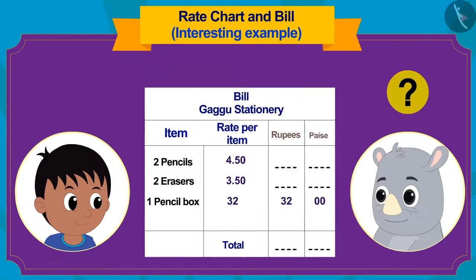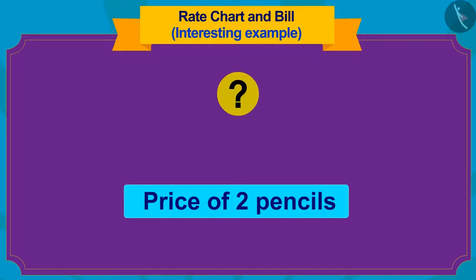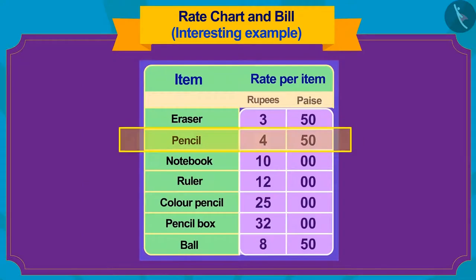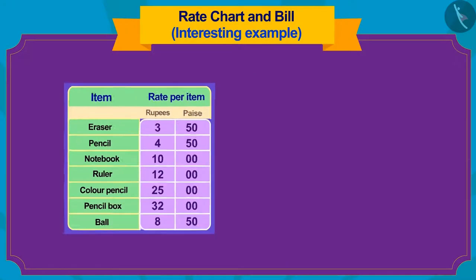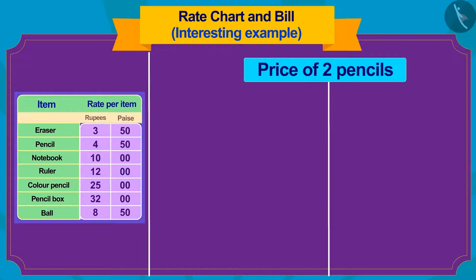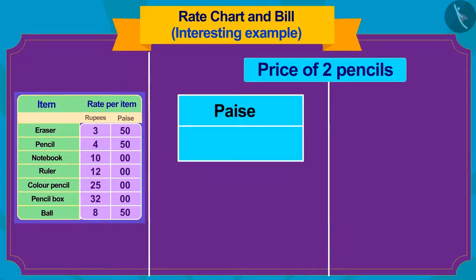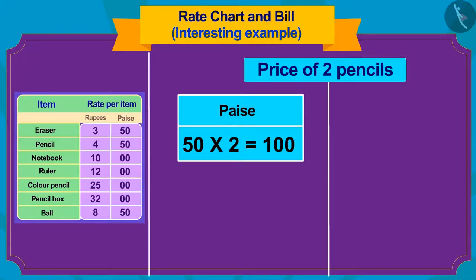First, we will find the price of two pencils. The price of one pencil is 4 rupees 50 paise. So how much will two pencils cost? First, we multiply the paise number 50 by 2. So how much money did that make? Alright! 100 paise.